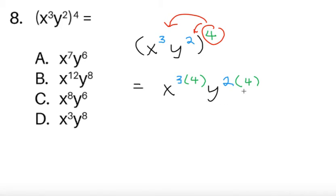So, it's going to be x raised to 3 times 4, and then y raised to 2 times 4. So, all we have to do is just evaluate that. 3 times 4 is 12, so it's x raised to 12. 2 times 4 is 8, so y raised to 8. So, we can see that it's answer B.